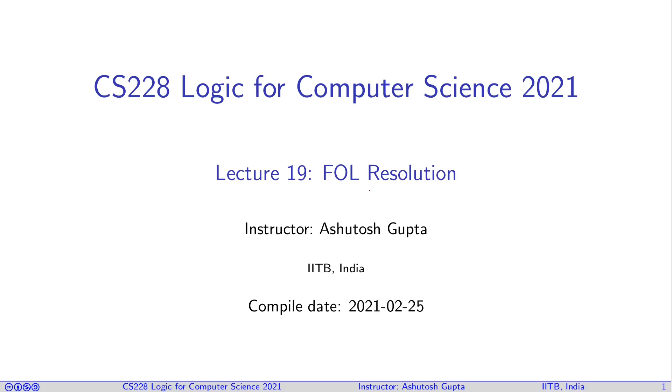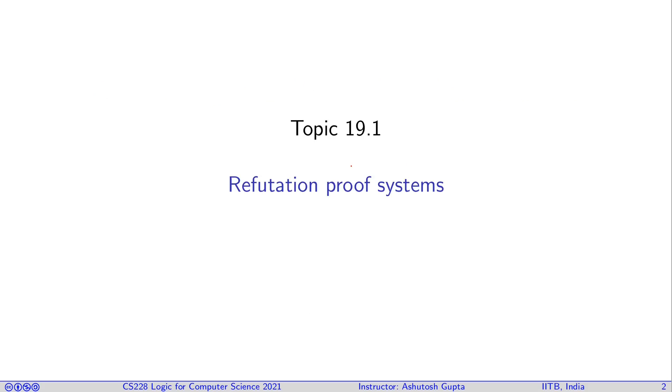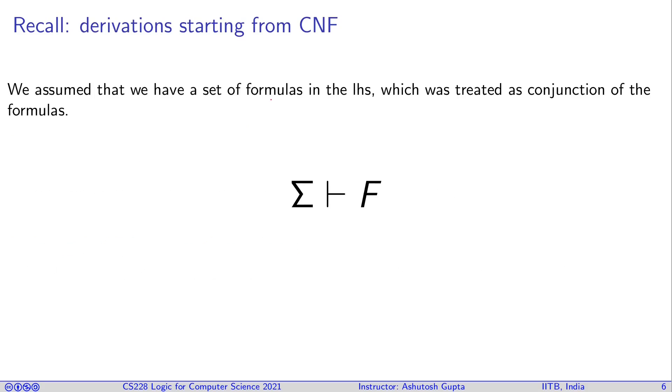Now let us study a resolution proof system for first-order logic. We have seen the refutation proof systems before. Let's remind ourselves what refutation proof systems are and how we can use resolution as a refutation proof system for our first-order logic. So we assume that we have a set of formulas in the left-hand side in this statement, which was treated as conjunction of formulas. This is conjunction of these formulas should prove this formula F.